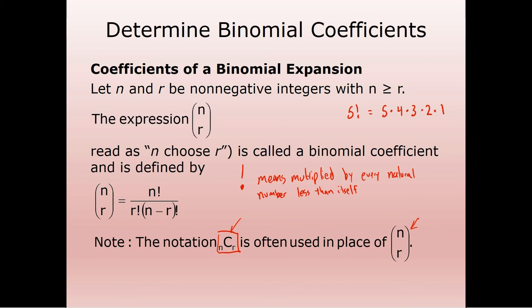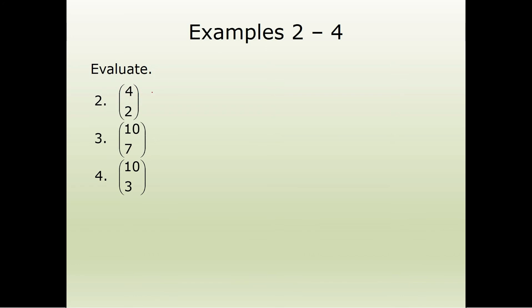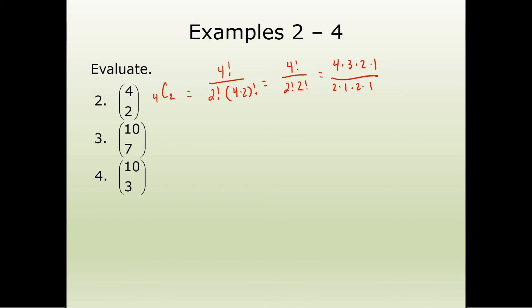How do we actually solve these? Take 4 choose 2. That's going to be 4 factorial over 2 factorial times 4 minus 2 factorial — so 4 factorial over 2 factorial times 2 factorial. Writing it out: 4 times 3 times 2 times 1, over 2 times 1 times 2 times 1. The 2 cancels the 2, and 2 goes into 4 twice, so we wind up with 2 times 3 times 1, which is 6. The way factorials work, they will always cancel out and you will never get anything other than a natural number.